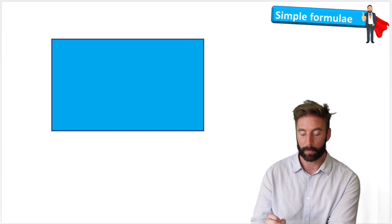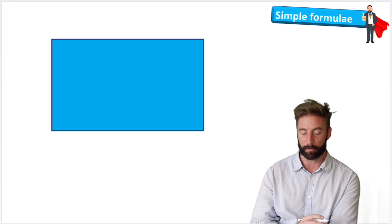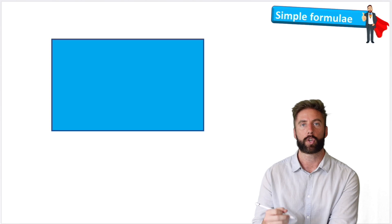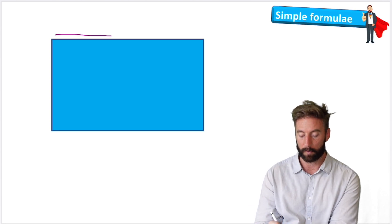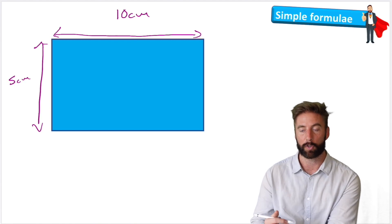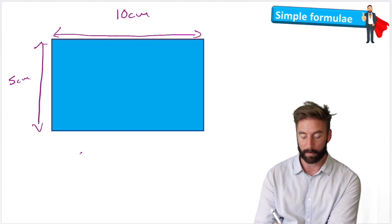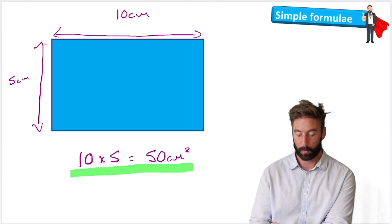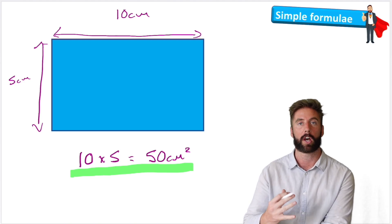I wanted to show you this rectangle because this is going to be our first example of where we could use a formula. Let's imagine we were trying to measure the area of this rectangle. So we know that we would have to find the measurement of the length and the width. For this rectangle the length is 10 centimeters and the width is 5 centimeters. Therefore to solve the area I would have to times 10 times 5 which equals 50 centimeters squared. So what we've just created here is a numerical equation. We have numbers, we have an equal sign, we have an answer.